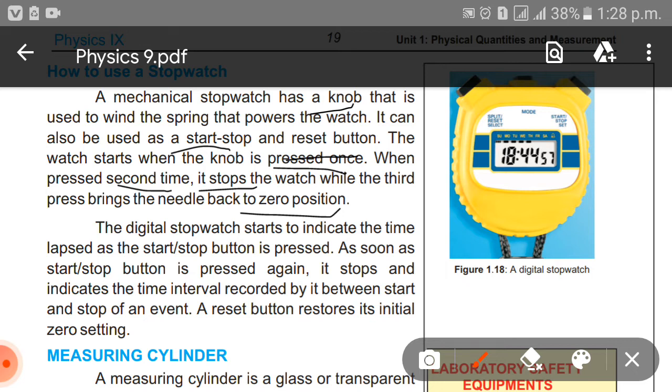The digital stopwatch starts to indicate the time lapsed as the start-stop button is pressed. As soon as the start-stop button is pressed again, it stops and indicates the time interval recorded by it between the start and the stop of an event.